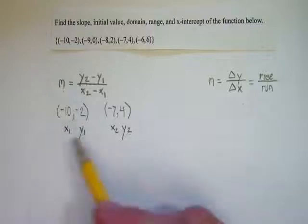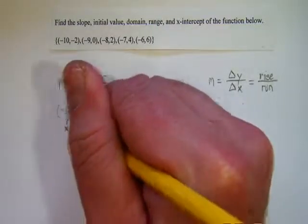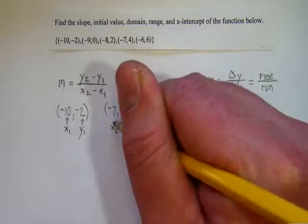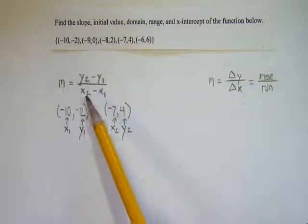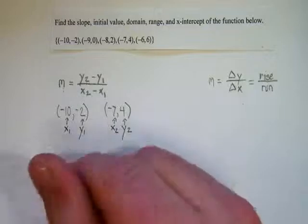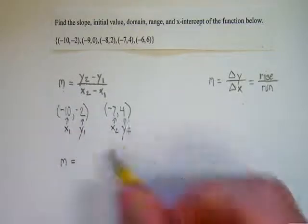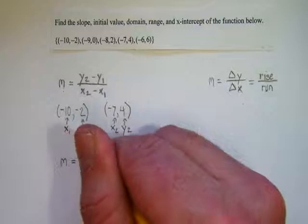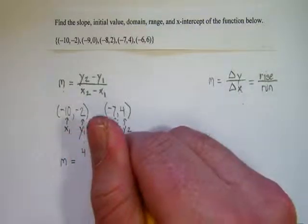Now I'm going to substitute these numbers, x1 is negative 10, y1 is negative 2, so on and so forth. I'm going to substitute those numbers back into my slope formula. So I'll rewrite this. I'll say my slope is equal to y2, which is 4, minus y1, which is negative 2. So notice that is 4 minus negative 2.